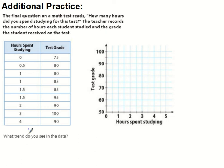So here is some data. The final question on a math test reads, how many hours did you spend studying for this test? The teacher records the number of hours each student studied and the grade the student received on the test. So here are our x's and here are our y's, and I know that because they labeled here as hours spent and test grade. What I'd like you to do, have the integrity, is to pause and graph these and then answer this question: what trend do you see in the data? It'd be nice if you could practice graphing them, see if it came out the same line, and then put what trend you saw without me doing it first.